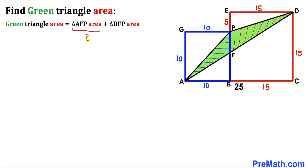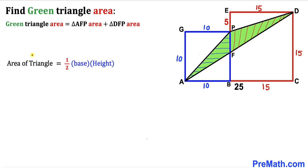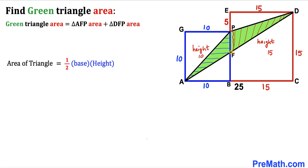Recalling the area of a triangle formula — area equals one-half times base times height — we can see the height of triangle AFP is 10 and its base is FP, while the height of triangle DFP is 15 and its base is FP as well. Our task is now to find the length of segment FP.